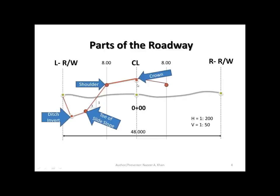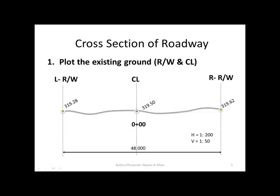Let's look at the parts of a roadway. We have the existing ground, shown by the gray line, and we have the roadway. The top of the road — the highest point — is considered to be the crown. The shoulder is right there, and we have a cross-fall of 0.2. We have the side slope, and the toe of the side slope is right there. We have the ditch invert and the left right-of-way limit. The right side will be the same. Anytime we plot a cross section, we put the station number at that location; the X will be right on centerline.